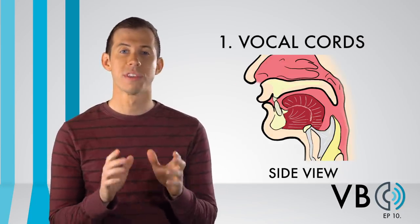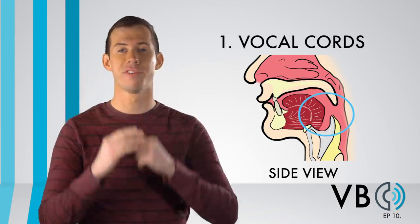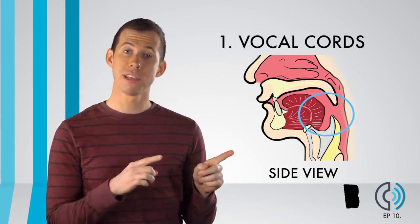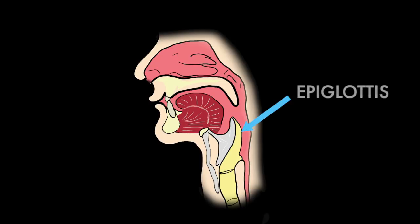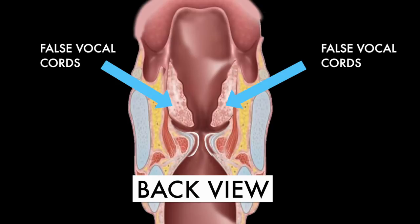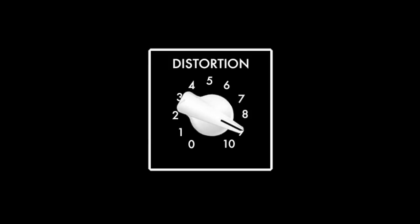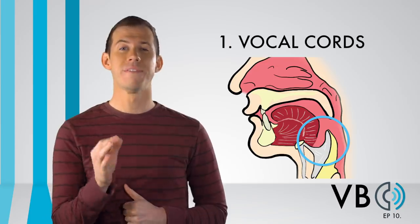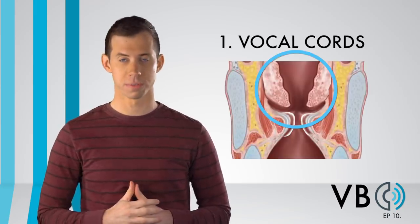The true source of this distorted voice comes from body parts above the true vocal cords. As discussed in the Miss Piggy and Jigsaw videos, the epiglottis and the false vocal cords can be used to create distortion. I am primarily using the epiglottis for this voice, but you can get a very similar sound using the false vocal cords.